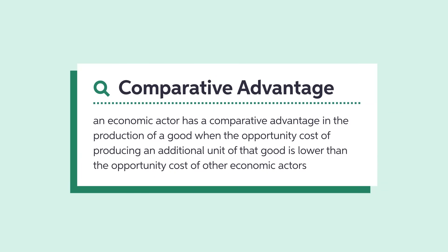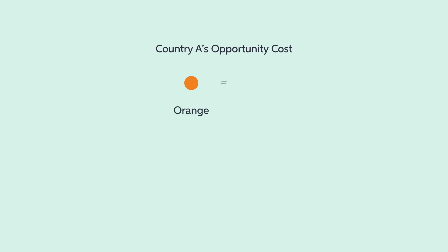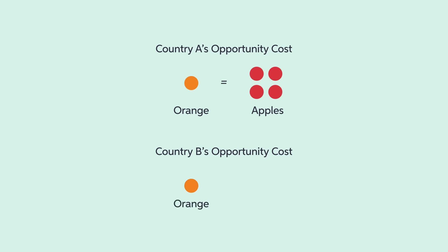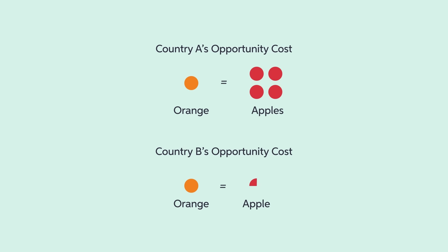What happens if the two countries were to trade? Each country would specialize in the activity for which it has the lower opportunity cost of production. This is called a comparative advantage. Country A's opportunity cost of producing one orange is four apples — that is how many apples the country needs to give up to produce one orange. In Country B, the opportunity cost of producing one orange is a fourth of an apple. Since the opportunity cost is higher in Country A, Country B has a comparative advantage in growing oranges.